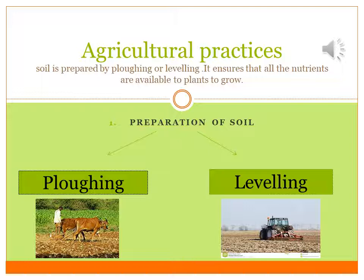First of all we must understand what is a crop. A crop is a plant that is cultivated on a field area and it can be of many varieties — it can be cereals like rice and wheat, it can be pulses, it can be oil seeds like groundnut and mustard, it can be fruit, or it can be fibres like cotton and jute.